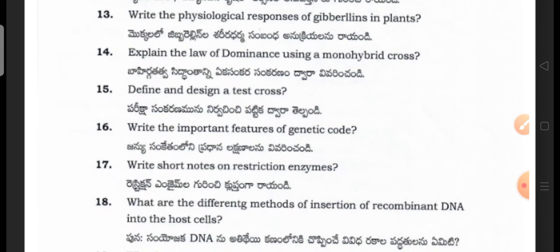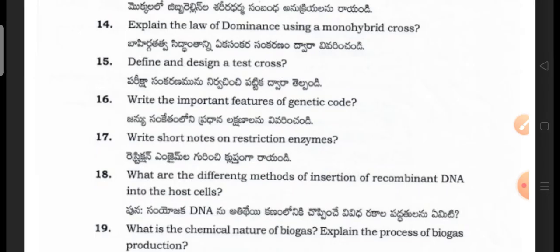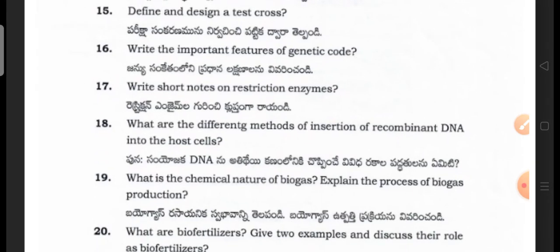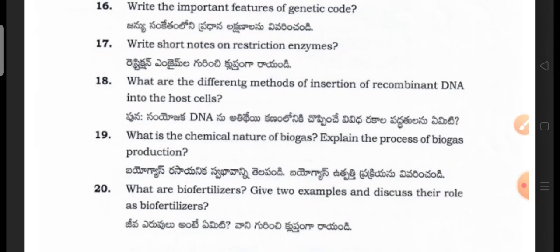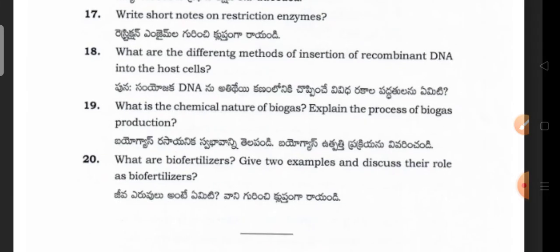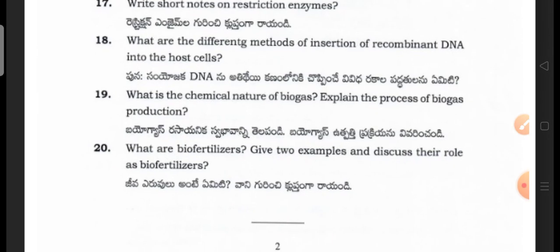What are the important features of the genetic code? Write short notes on restriction enzymes. What are the different methods of insertion of recombinant DNA into the host cells? What is the chemical nature of biogas — explain the process of biogas production. What are bio-fertilizers? Give examples and discuss their role as bio-fertilizers.